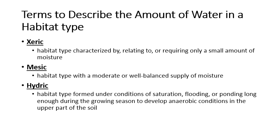We also describe many of our vegetation associations based on the amount of water present. A xeric site requires or gets a very small amount of moisture—an extreme xeric site might be a desert, or Florida shrub scrub. Mesic means there's a well-balanced supply of moisture, typical of upland mixed hardwood forest. Hydric sites are associated with wetlands, where conditions are saturated and you'll see wetland indicators in the soil.